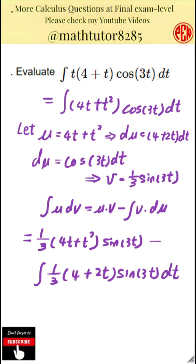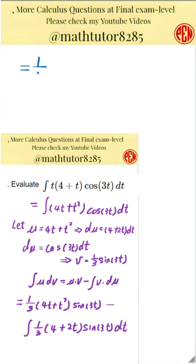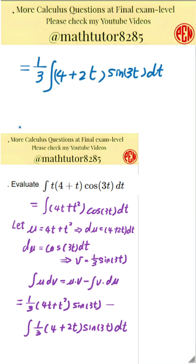Next, we deal with the second integral — the integral of the expression 4 plus 2t times sine of 3t. We again use integration by parts.